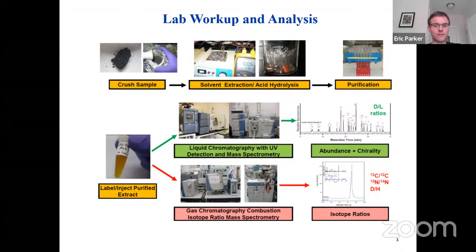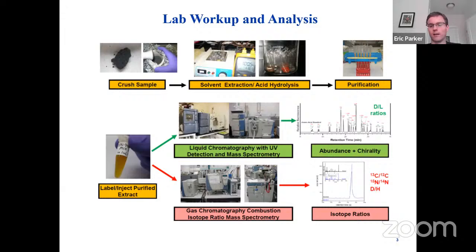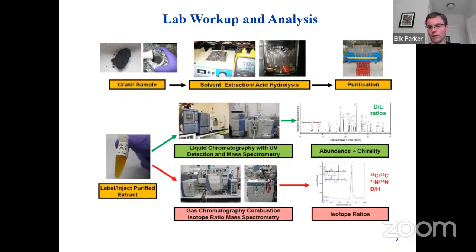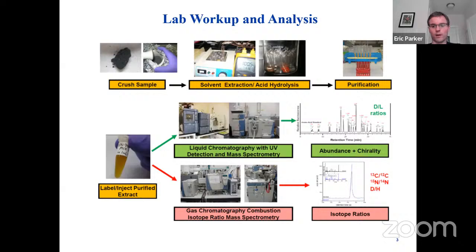After acid hydrolysis, we do purification steps — typically desalting to remove salts from the sample, which alleviates downstream analytical issues. Following purification, we often derivatize or modify the analytical targets to increase analytical sensitivity and specificity. We then look for amino acids and other organics using two main approaches: liquid chromatography mass spectrometry, which gives us abundances of amino acids and can determine chirality — how much of an analyte is present as the D or L amino acid — and gas chromatography with isotope ratio mass spectrometry, which determines isotopic ratios of different elements within the compound. This is important for distinguishing terrestrial compounds, which tend to be more abundant in lighter isotopes, from extraterrestrial compounds, which can be relatively more abundant in heavier isotopes.